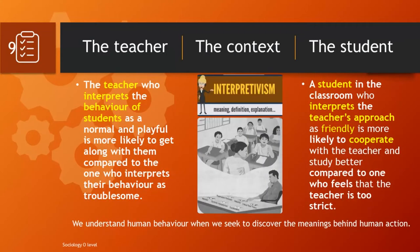Let me now give you some more examples in your own context. You are familiar with the classroom where there is a teacher and students. There are teachers who interpret the behaviour of students as normal and playful, and they are more likely to get along with students, compared to those who interpret the behaviour of students as troublesome. In the same way, students in the classroom would interpret the teacher's approach as friendly, compared to others who look at the teacher as strict and too demanding. It is the same context, same situation, same teacher — different students giving different interpretations to the situation, and different teachers giving different interpretations.